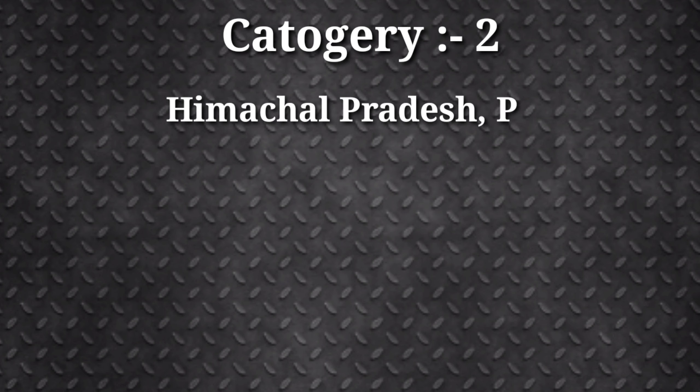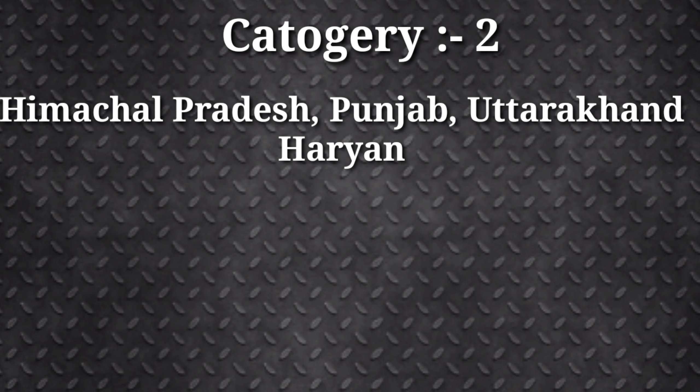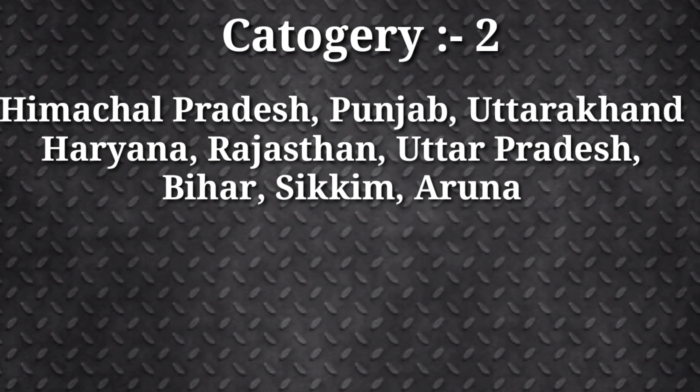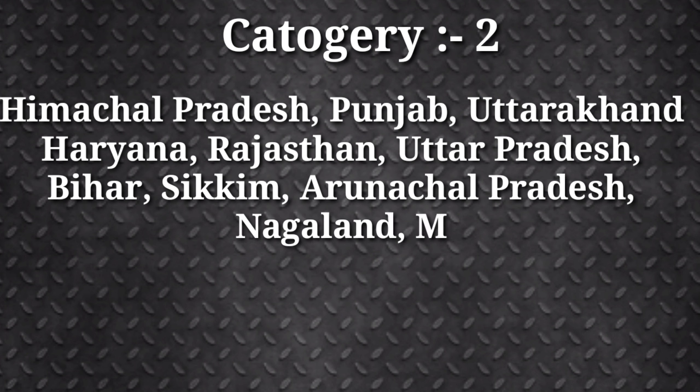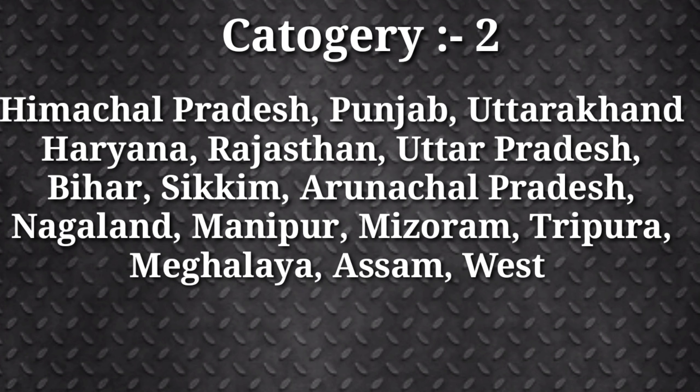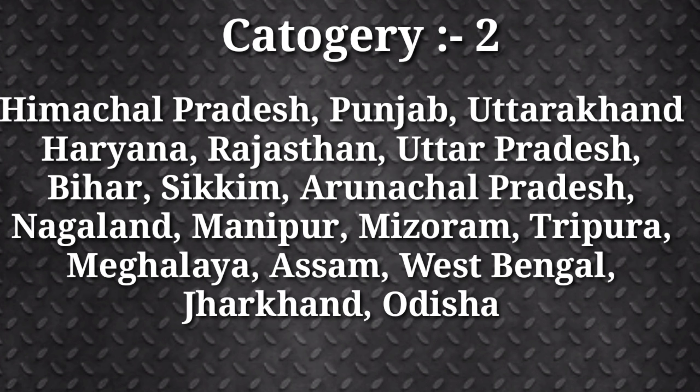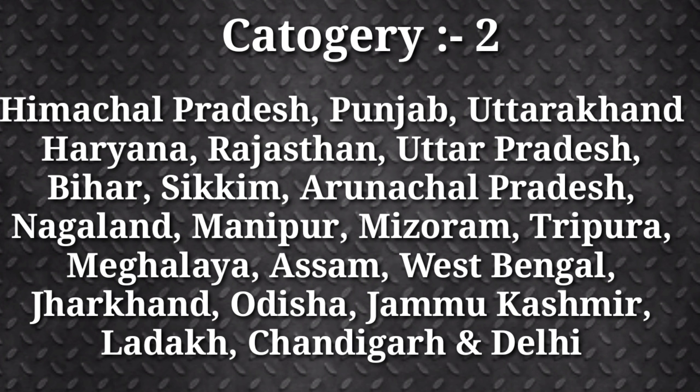Category 2 covers the states of Himachal Pradesh, Punjab, Uttarakhand, Haryana, Rajasthan, Uttar Pradesh, Bihar, Sikkim, Arunachal Pradesh, Nagaland, Manipur, Mizoram, Tripura, Meghalaya, Assam, West Bengal, Jharkhand, Odisha, Jammu and Kashmir, Ladakh, Chhattisgarh and Delhi.